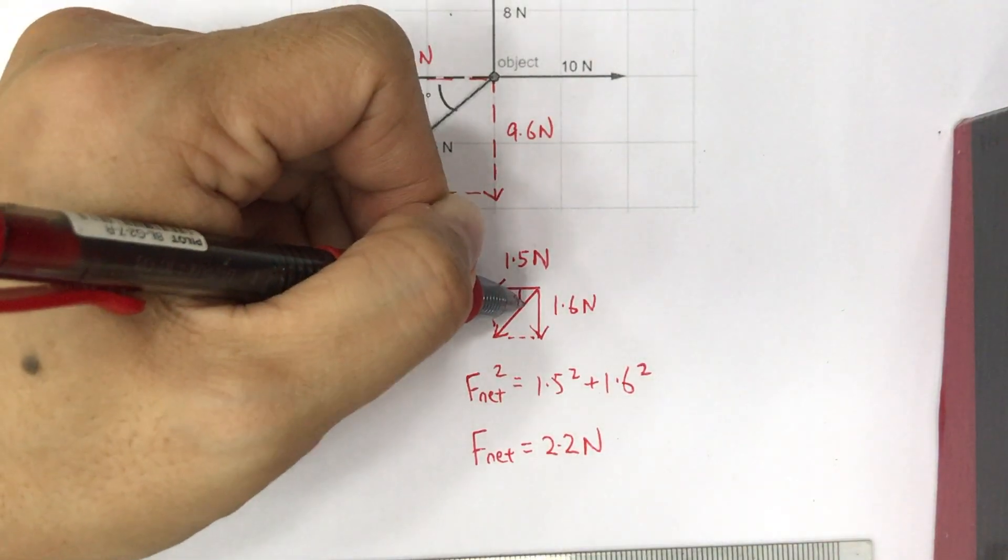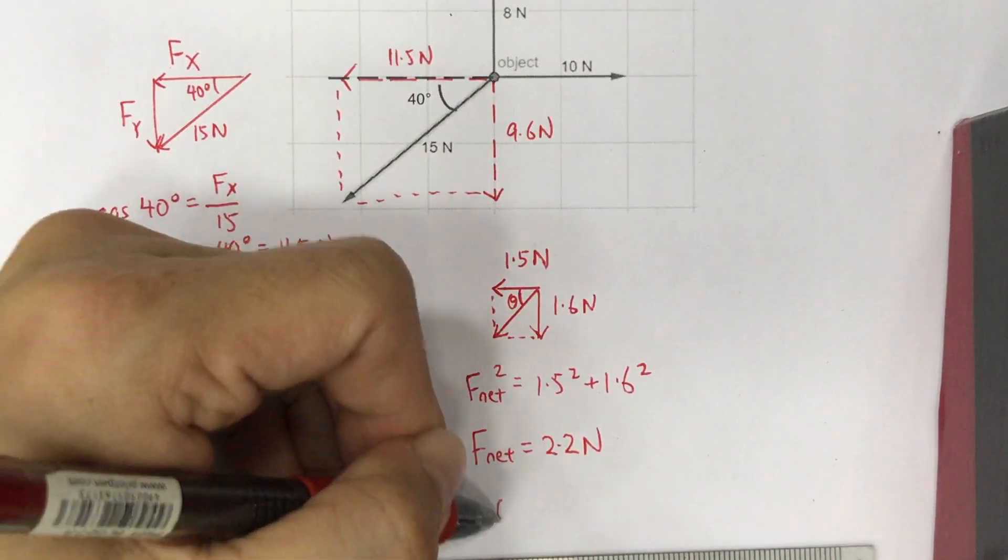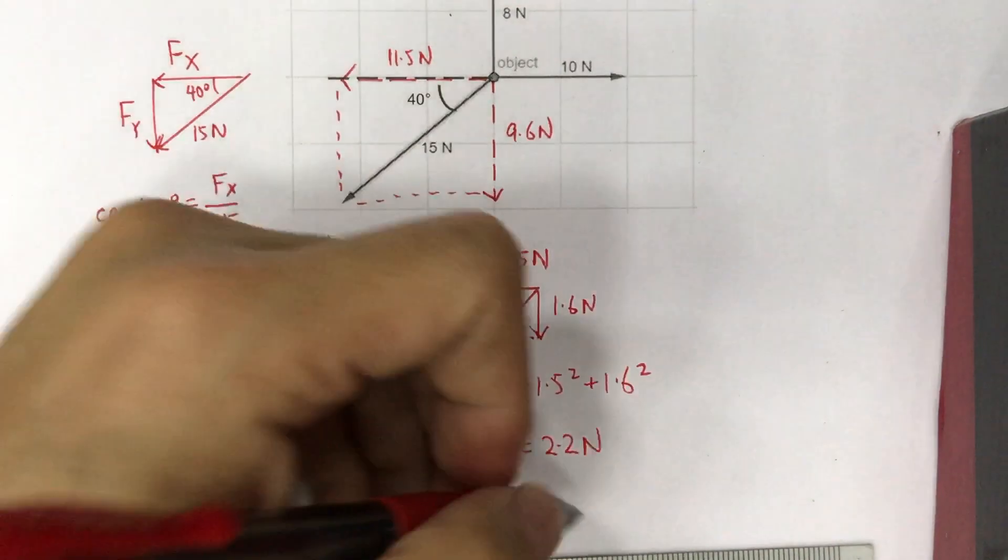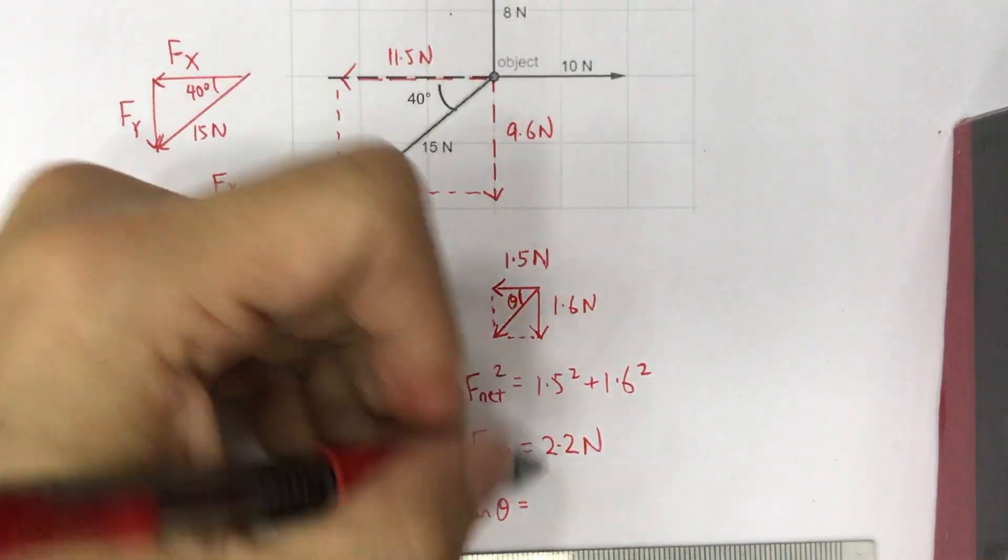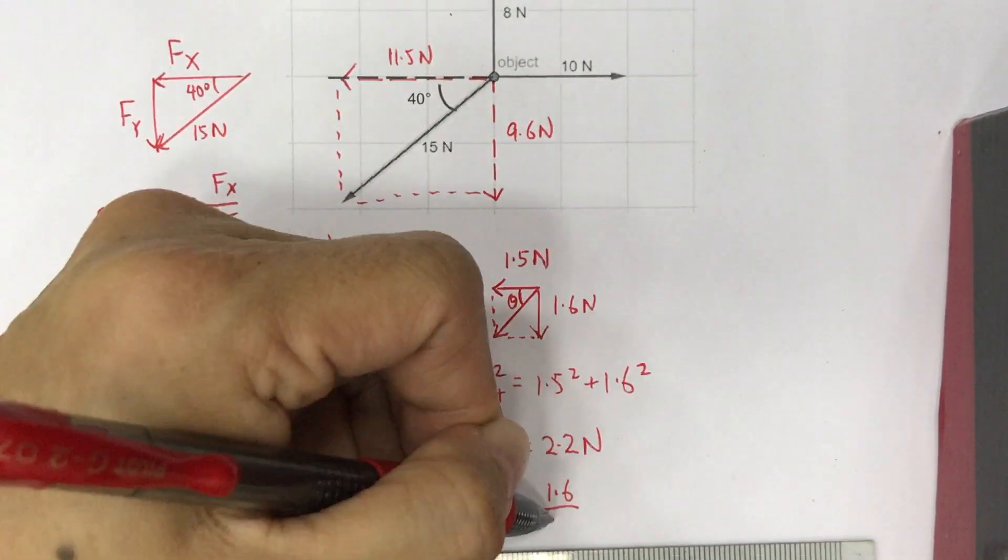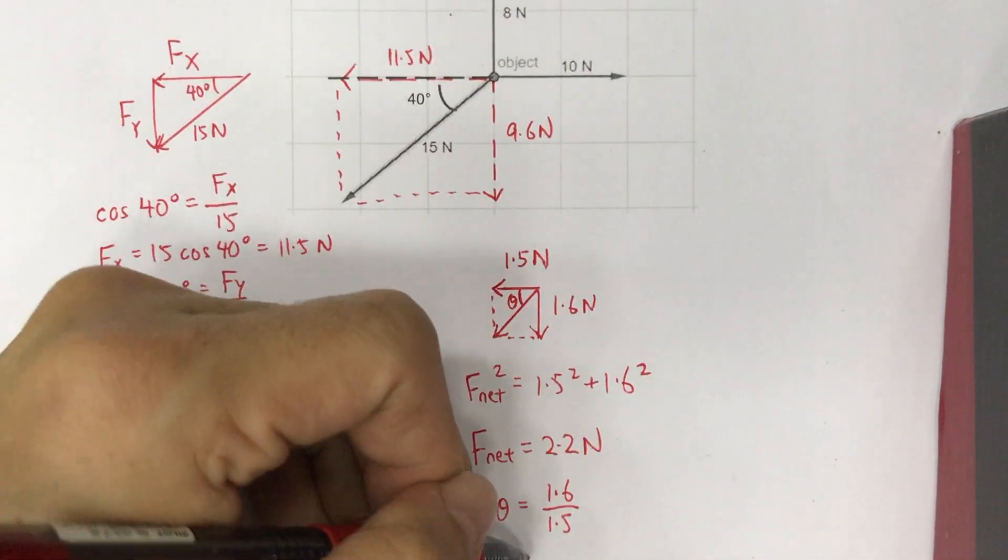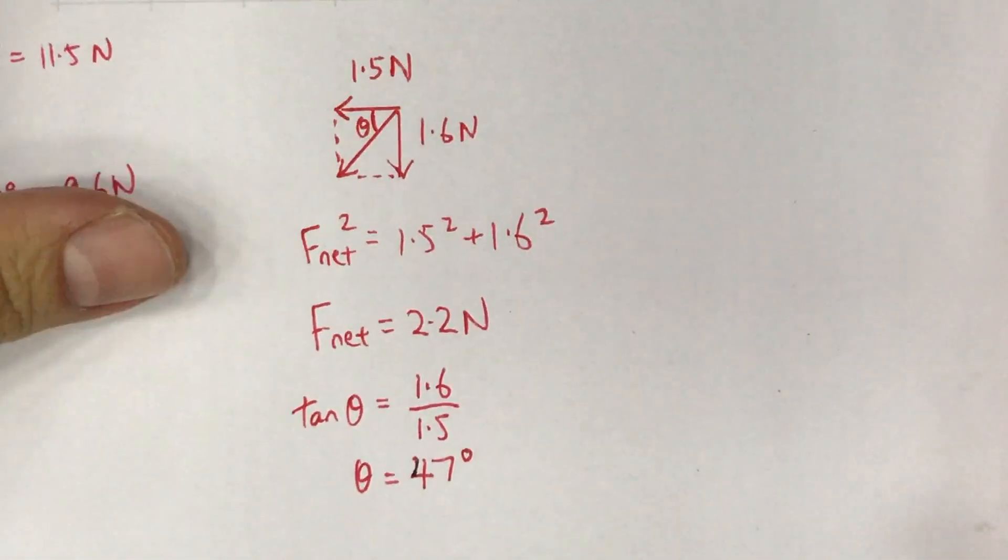To find the angle at which the net force is acting, let's take it with respect to the horizontal line. If we choose tangent theta, we can take the opposite side of theta, which is 1.6 divided by the adjacent side of theta, which is 1.5, as the tangent. So that gives us an angle of 47 degrees.